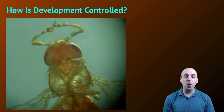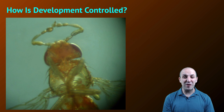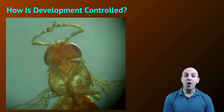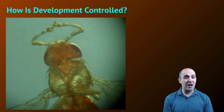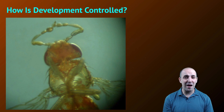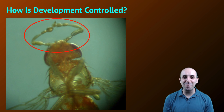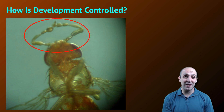The question that we're going to be answering is: how is development controlled? Because when it's not controlled, things go really funky really quickly. This may look like a normal fruit fly to you, but you may not have noticed that rather than having antennae on its head, it has feet. Something has happened in the development of this fruit fly that has led to feet being on its head.